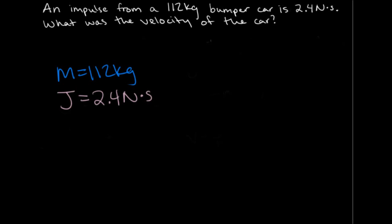And they want to know what is the velocity of the car. I'm going to write the equation for impulse equals the change in momentum, which can be represented by variables as J equals delta P.